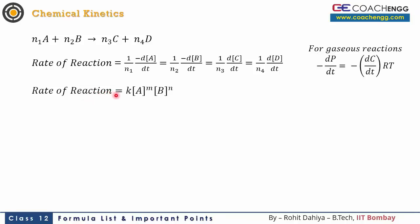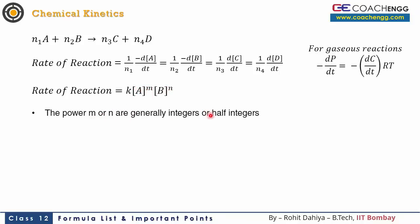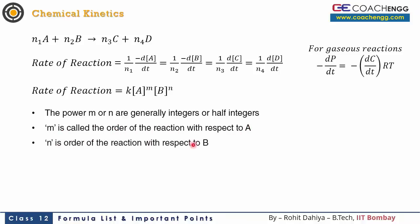Now let's write the rate law. Rate of reaction = k[A]^m [B]^n, where k is the rate constant. The rate of reaction at any instant is proportional to the concentration of the reactants present. Here m and n are generally integers or half-integers. m is known as the order of reaction with respect to A, n is the order with respect to B, and the sum m + n is known as the overall order of the reaction.